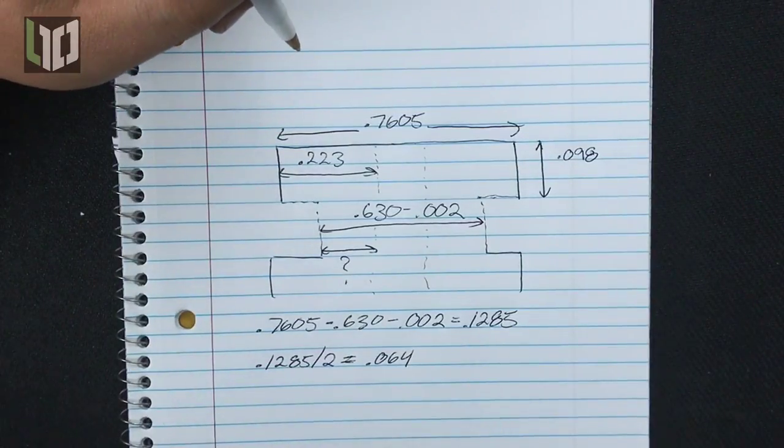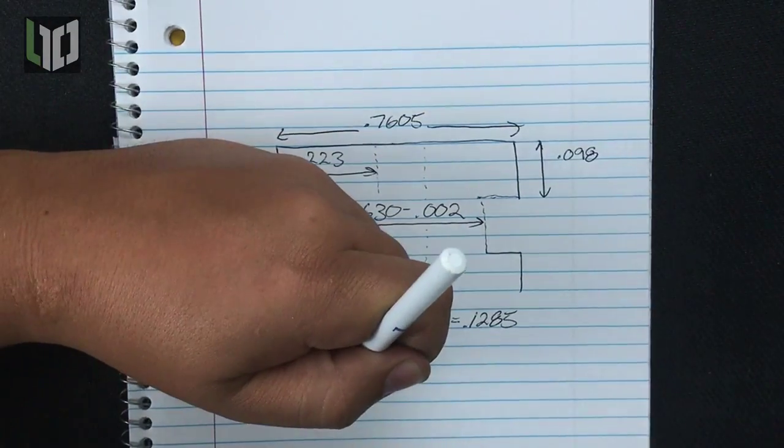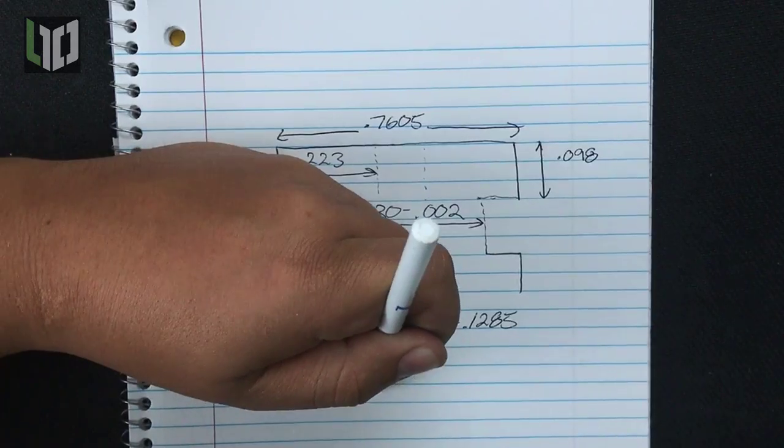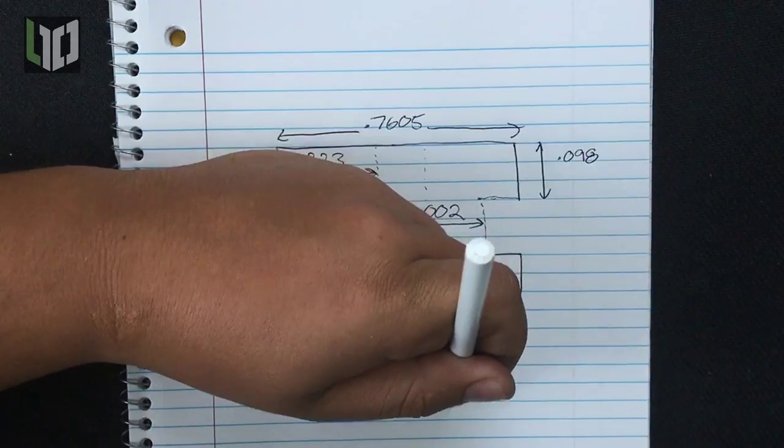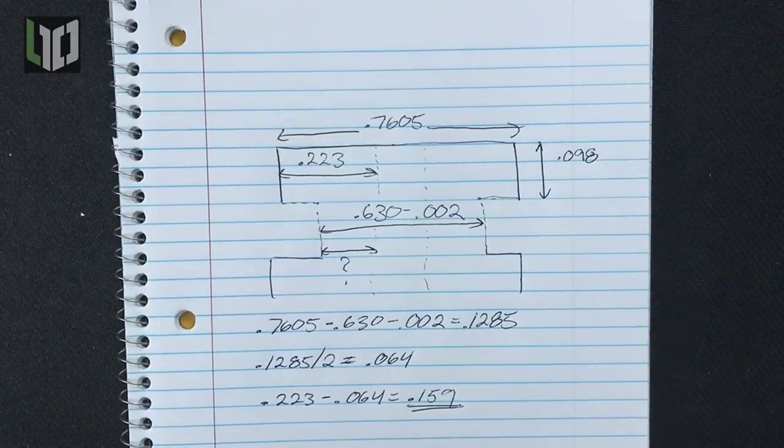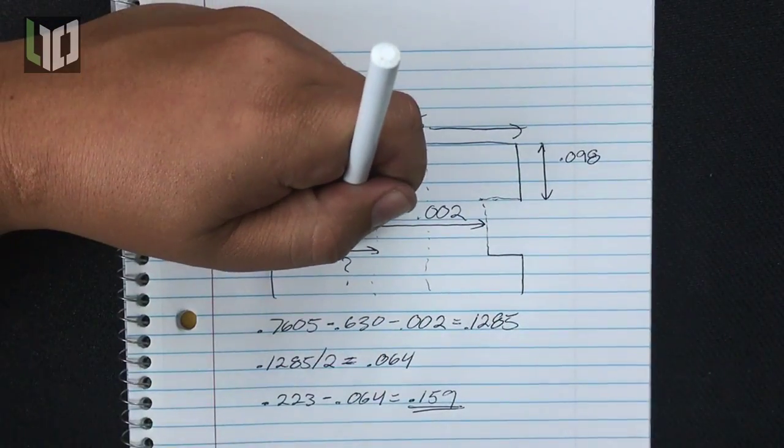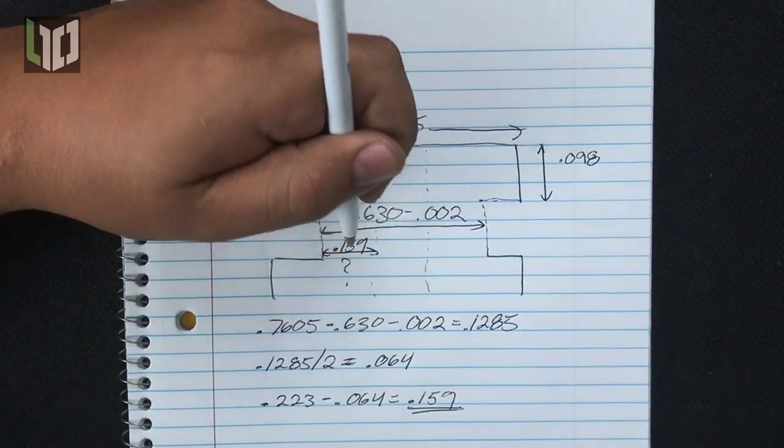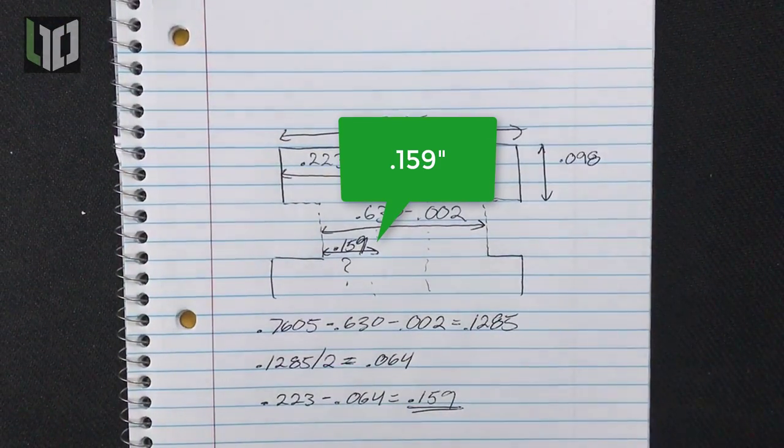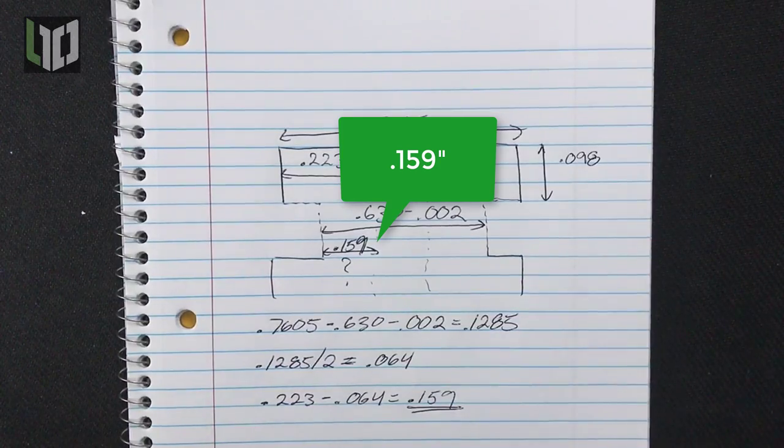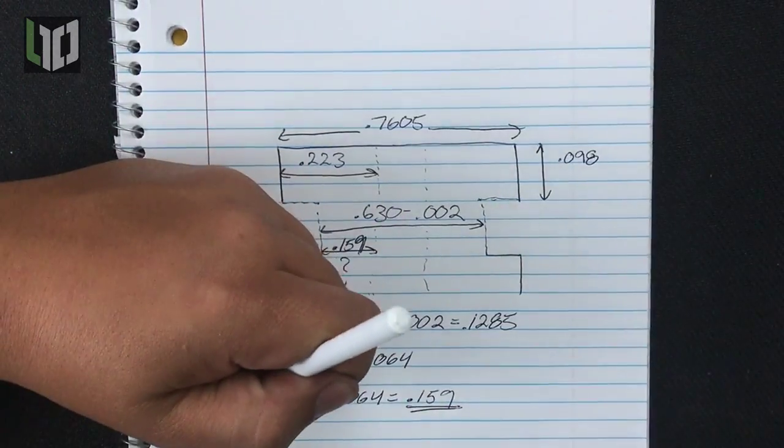Knowing 64 thousandths needs to be cut off from each side you can simply subtract our 64 thousandths final depth of cut from our starting 0.223 frame rail to hammer slot width. My result is 0.159 which will be my targeted final thickness between the frame rail groove and hammer slot. You're going to want to repeat this process for both sides of the frame since they may not be symmetrical.